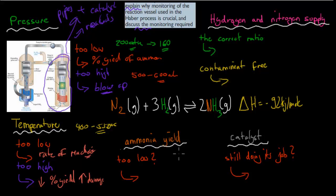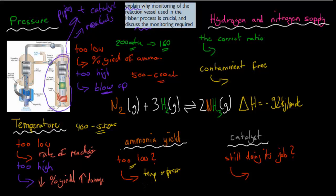We also want to monitor ammonia yield — looking at what comes out of the reaction vessel. Is the ammonia yield that we targeted being achieved, or is it too low? If there's a problem with ammonia yield, the production chemist has to figure out why: it could be something to do with the temperature being wrong, the pressure being wrong, or maybe the supply of hydrogen and nitrogen is somehow wrong and the concentration of reactants is different. He has to determine what's happening in the reaction vessel that's causing the decreased ammonia yield.